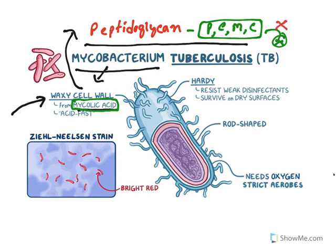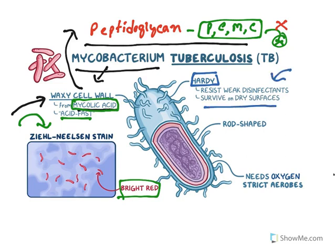All these beta-lactam classes are ineffective in case of TB because the cell wall here is mycolic acid, not peptidoglycan. Another unique feature: TB is an acid-fast bacteria and gives a positive test for Ziehl-Neelsen stain, which gives a bright red color. The waxy cell wall is very hard, resistant to disinfectants, and can survive on dry surfaces. The organism is rod-shaped and strictly aerobic.